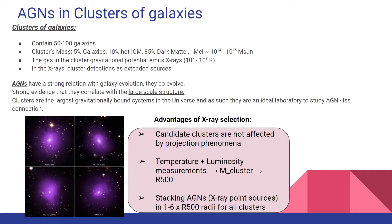The gas in the cluster gravitational potential emits X-rays, and that's why we detect clusters as X-ray extended sources. AGN have a strong relation with galaxy evolution. There is also strong evidence that they correlate with large-scale structure, and because clusters are the largest gravitationally bound systems, they are an ideal laboratory for the AGN and large-scale structure connection.